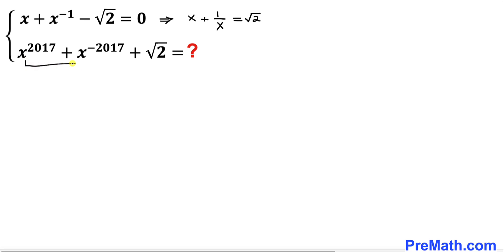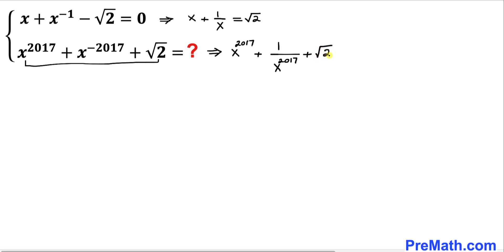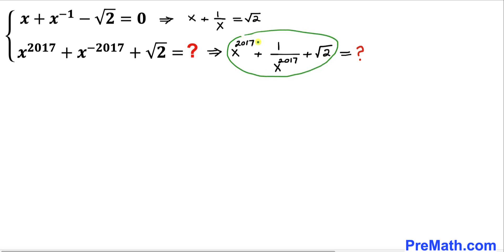Likewise the target expression could be written as x power 2017 plus 1 divided by x power 2017 plus square root of 2. Now we are going to find the value of this whole expression. Let's focus once again on the first equation: x plus 1 divided by x equals square root of 2.